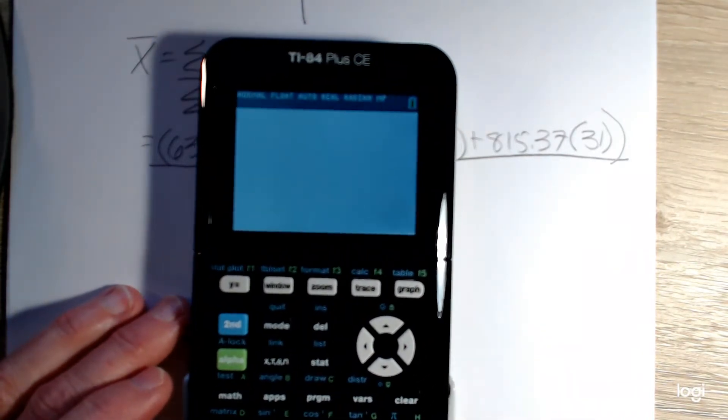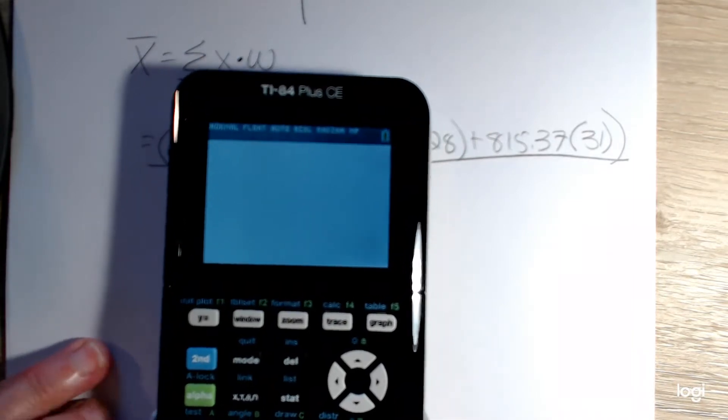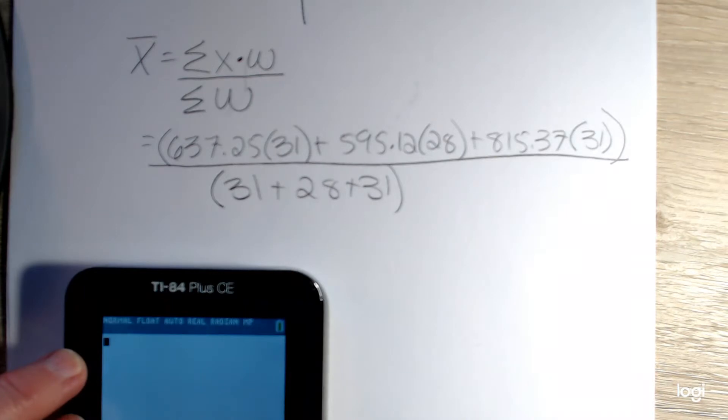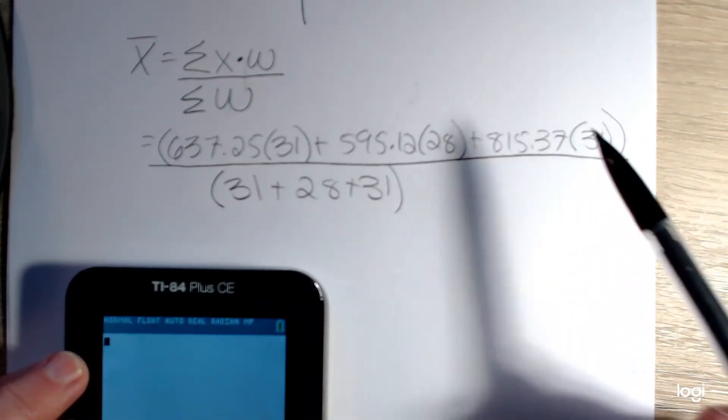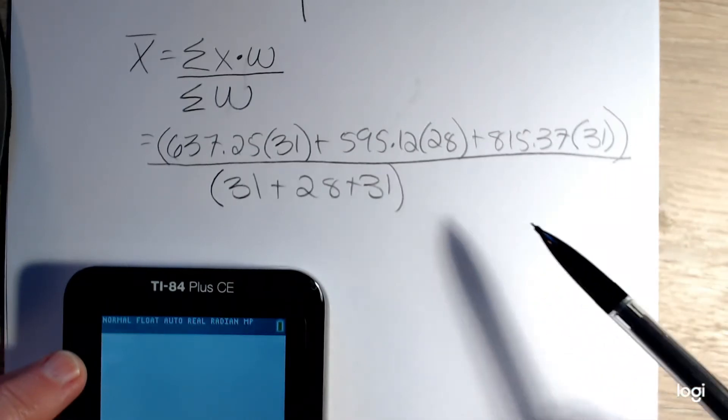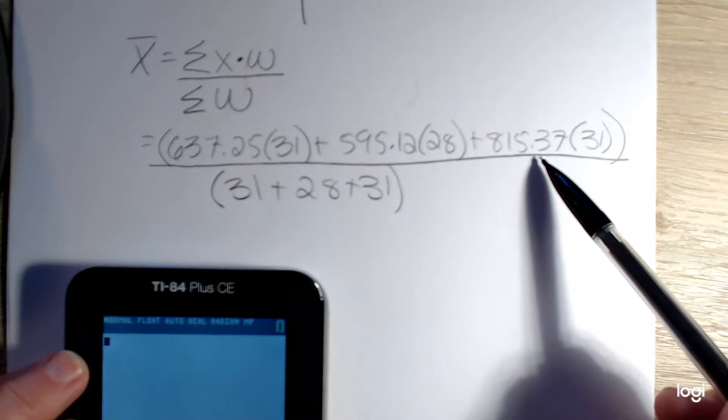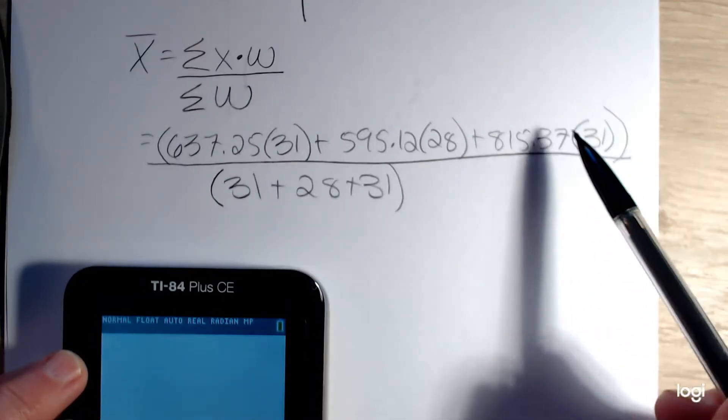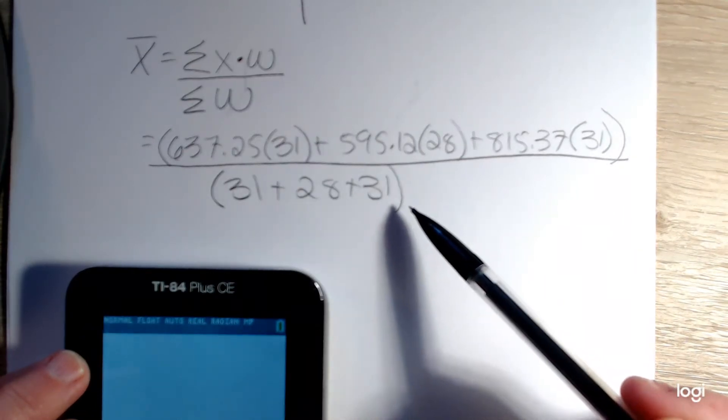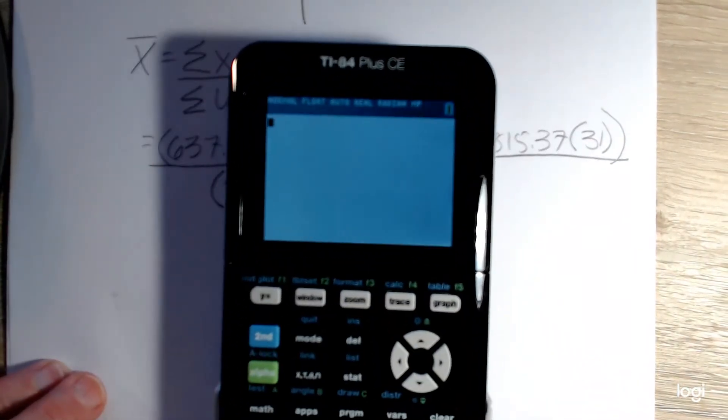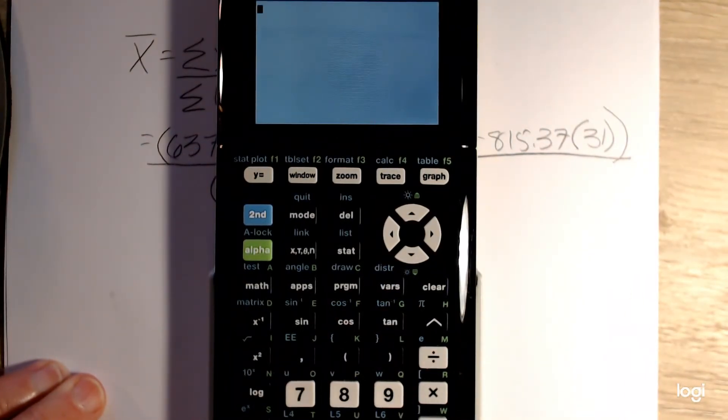What I want to do is open up a set of parentheses for the numerator expression. The reason why you want to do that is if you don't, if you put it in as is without outer parentheses in the numerator and the denominator, it's only going to divide this last term by either 31 or by whatever sum you found in the denominator. The parentheses are above your 8 and 9 key on your calculator.